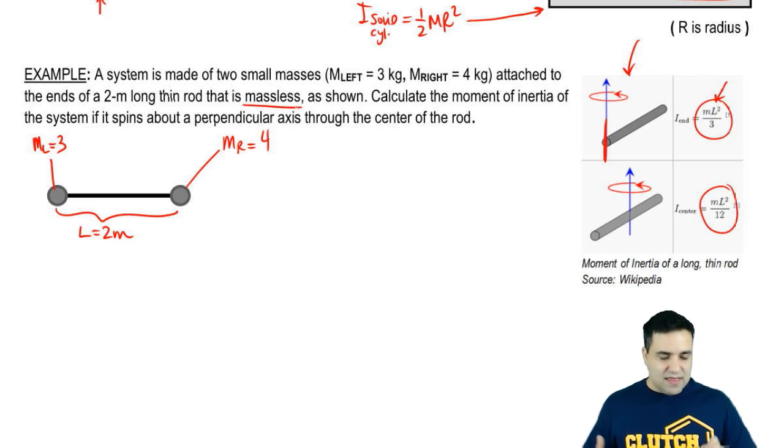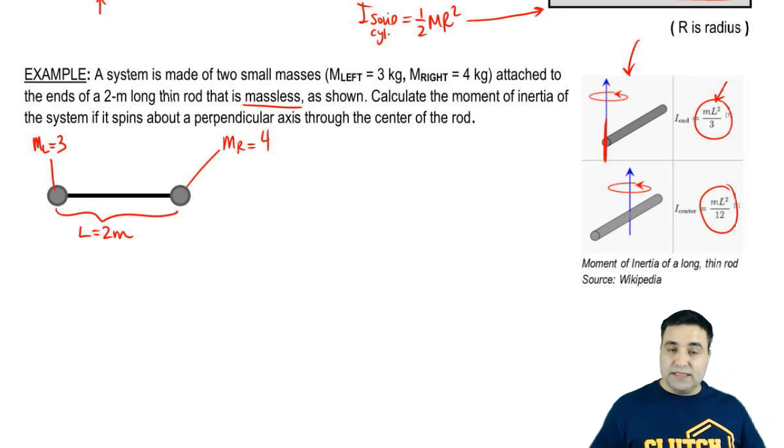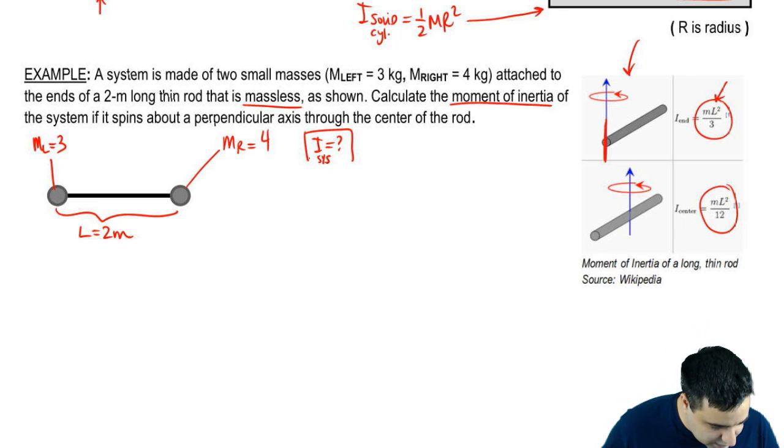That is massless. So it's a thin rod that has no mass at all. And we want to calculate the moment of inertia of the system if it spins about a perpendicular axis to the center of the rod. There's a lot of words here, and you're going to get used to this. So I want to know the moment of inertia, I equals question mark, of the system.